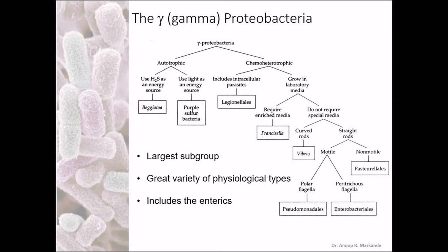Gamma Proteobacteria includes Beggiatoa — purple sulfur bacteria. If they are using autotrophic mode of nutrition and are chemoautotrophs using H2S as energy source, they are usually Beggiatoa. If they are using light as energy source, they are purple sulfur bacteria.